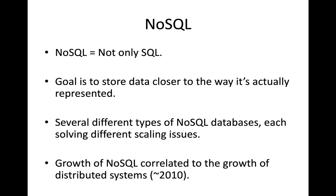One of the common database platforms found in distributed architectures is what we call NoSQL platforms, which stands for 'not only SQL.' NoSQL platforms are a bit different than our traditional relational database platforms, which have ruled the world for many decades. But over the last 10 years or so, NoSQL databases have really made a big impact in modern application architectures. The primary goal of NoSQL databases is to store data in a way that represents how the data is actually used.